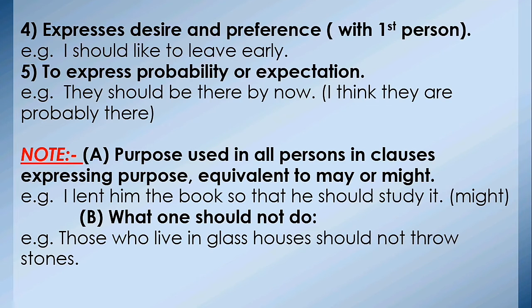Number four: express desire and preference in first person — I or we के साथ desire और preference व्यक्त करने में 'should' का प्रयोग किया जाता है। 'I should like to leave early.' — मुझे जल्दी जाना चाहिए। Number five: to express probability and expectation — संभावना और आकांक्षा। For example: 'They should be there by now.' — अभी तक उन्हें वहाँ होना चाहिए। I think they are probably there — मुझे लगता है कि वह वहाँ होंगे।